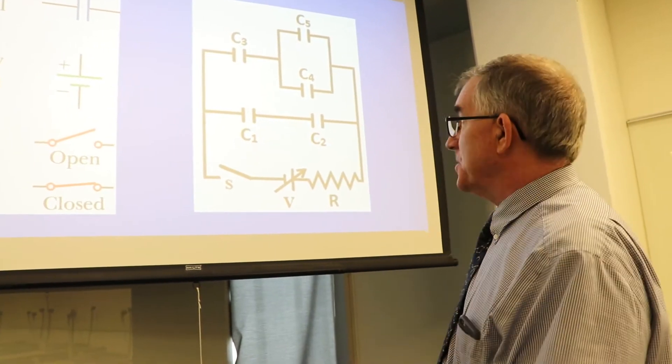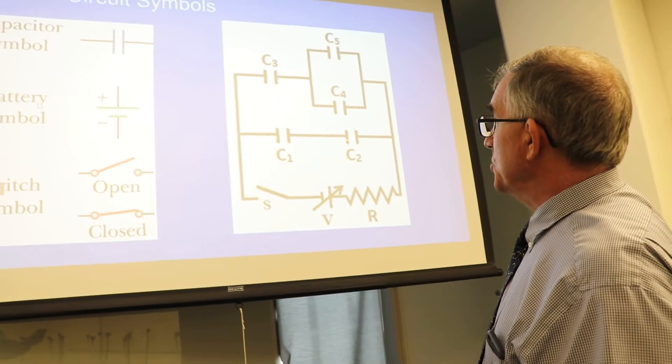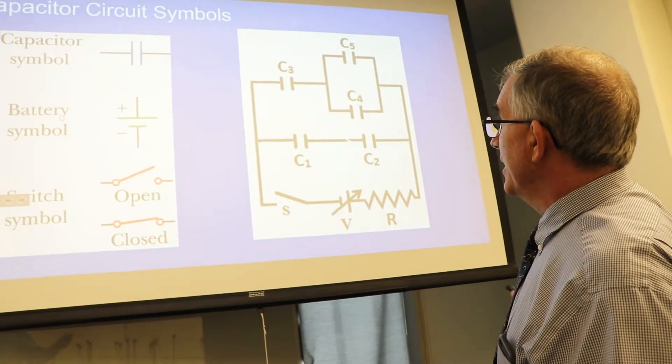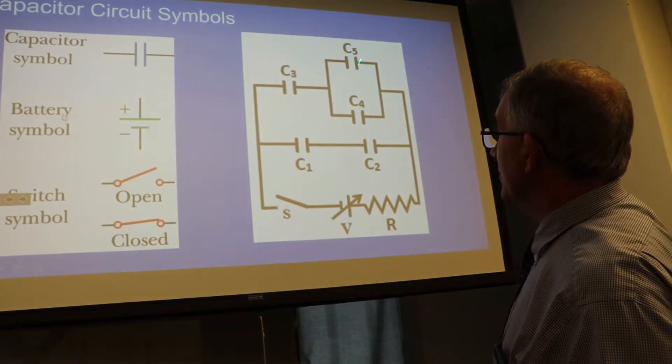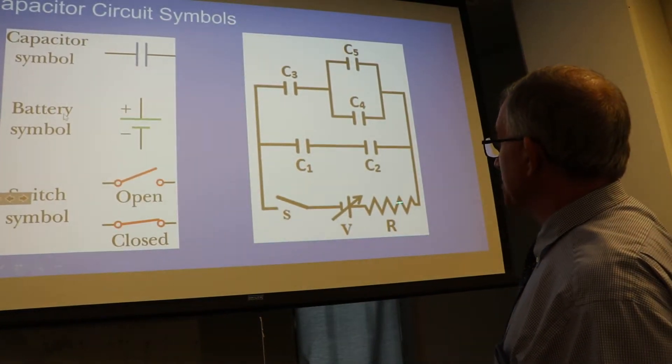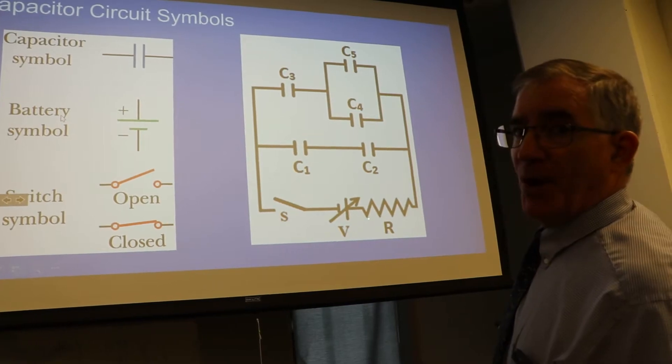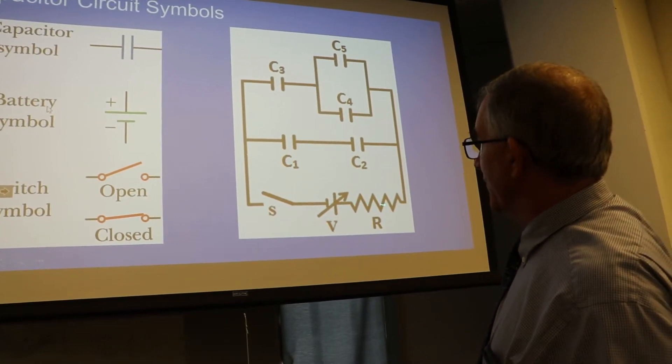Now the circuit we're going to be looking at is up here on the board again. There's two capacitors in series, and then up here C3 is in series with C4 and C5, which are in parallel. There's a resistor down here, which is like the light bulb when I lit up the light bulb with the capacitor.